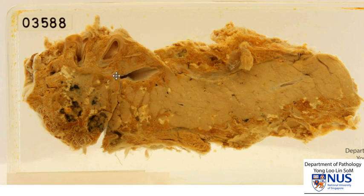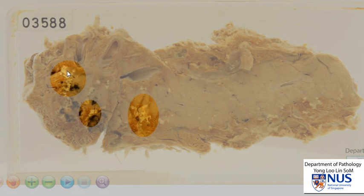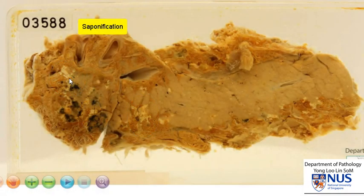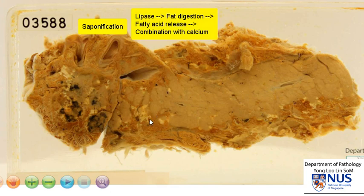This pancreas shows some areas of abnormality. In these regions you can see some kind of pale yellowish or whitish chalky deposits. These are likely to represent soaps from the process of saponification. This is a result of lipase digestion of the fatty tissue, either in the peripancreatic fat or in the adipose tissue within the pancreatic parenchyma. There is a release of lipases from the acinar cells and digestion of fat, with fatty acid release combining with calcium and therefore formation of soaps. We can recognize this grossly.